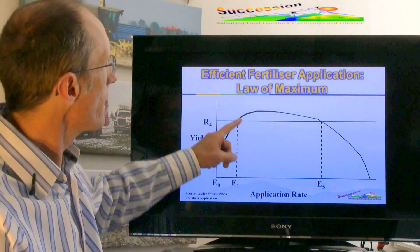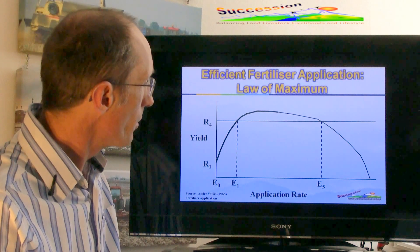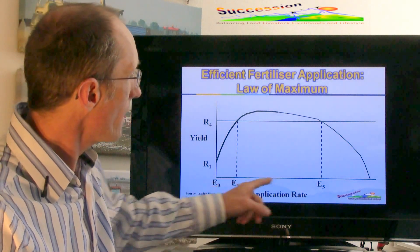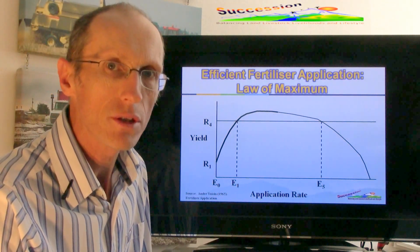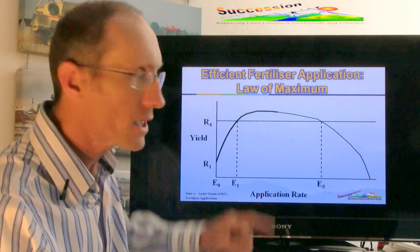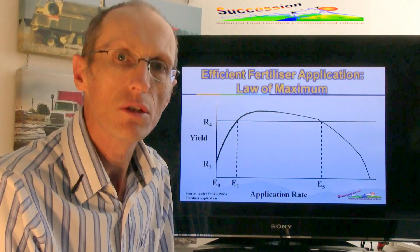Now, farmers are told to aim for the top of the curve. But look at this, anywhere between 1 and 5 times the application rate of fertilizer will get you within 90% of that maximum. What could that be doing to your cost of production?